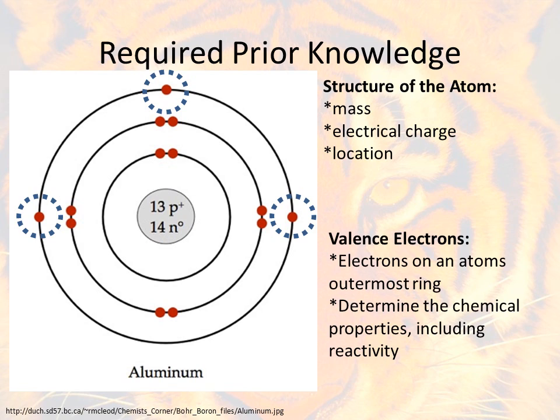We also added valence electrons. This was a new term for us this year. So for valence electrons, whatever the outermost ring for that atom is, those are the valence electrons on that ring. So in this one, we're looking at aluminum, and here we can see it has one, two, three valence electrons.